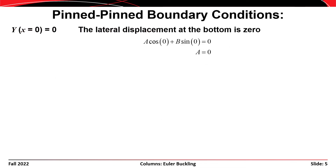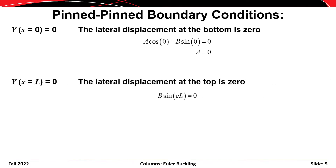The next step is to use the boundary conditions of the column to solve for constants A and B. The first boundary condition is that the displacement at the bottom of the column equals zero: y(x=0) = 0. Plugging in x=0 gives A times cosine(0) plus B times sine(0) equals zero, leading to the conclusion that A = 0. The second boundary condition is that the lateral displacement at the top equals zero: y(x=L) = 0, giving B times sine(cL) = 0.